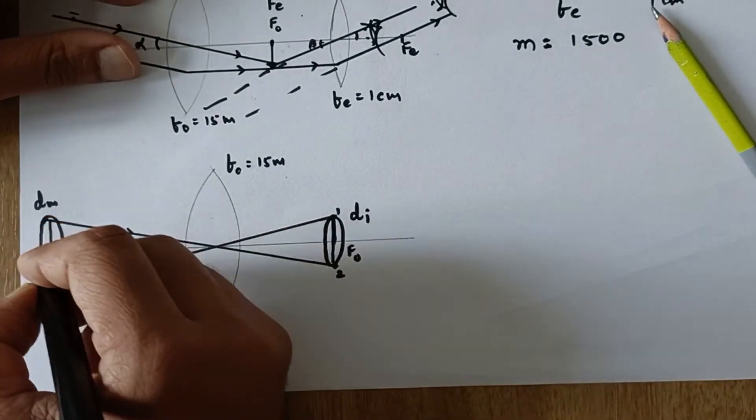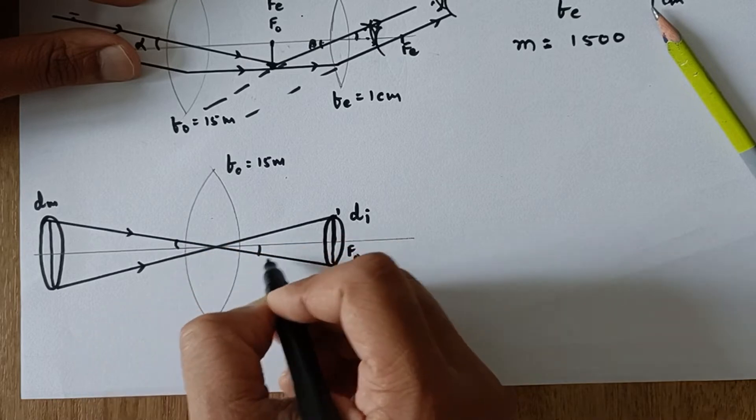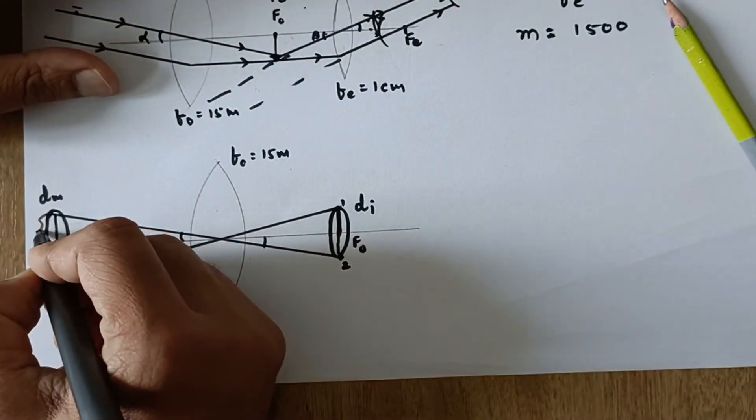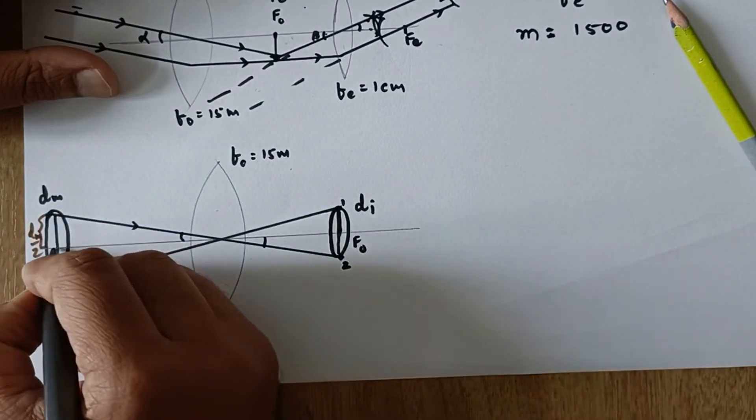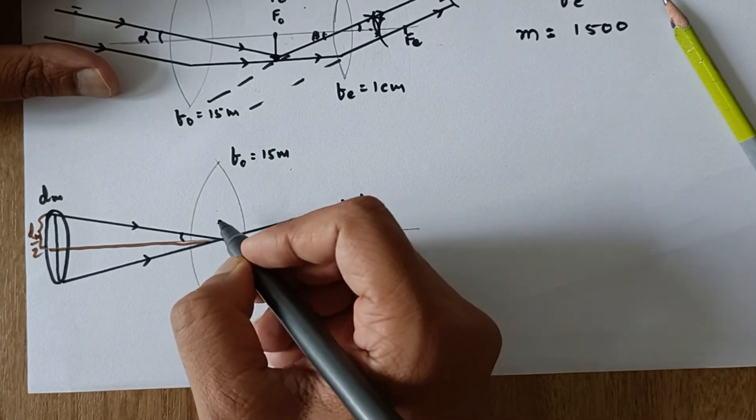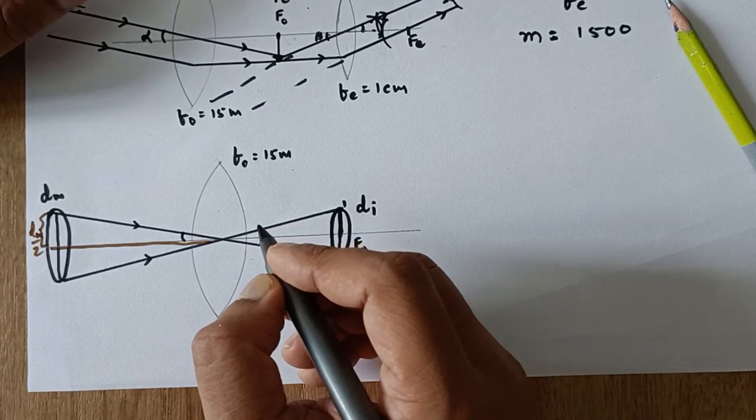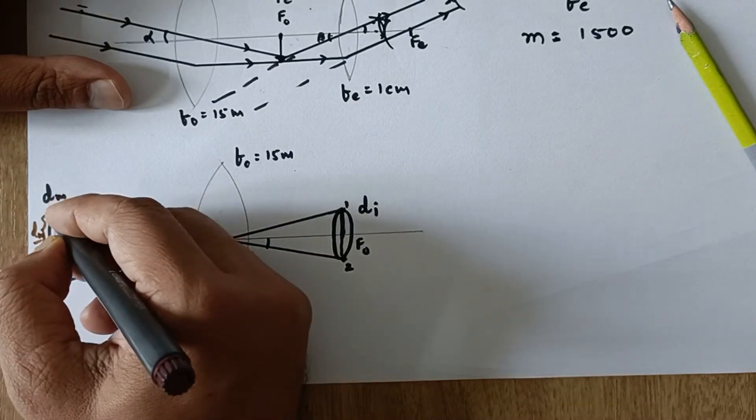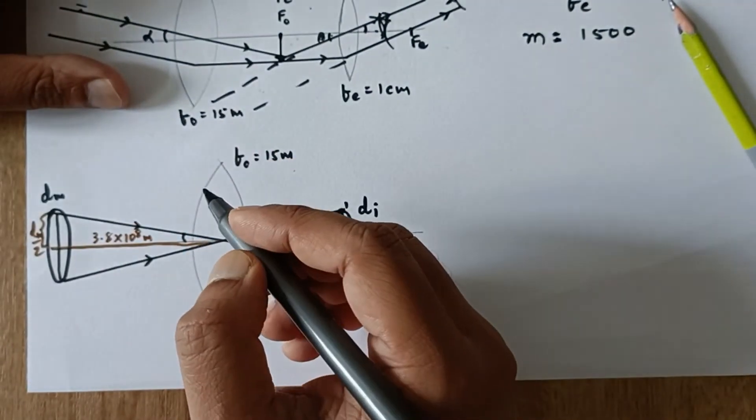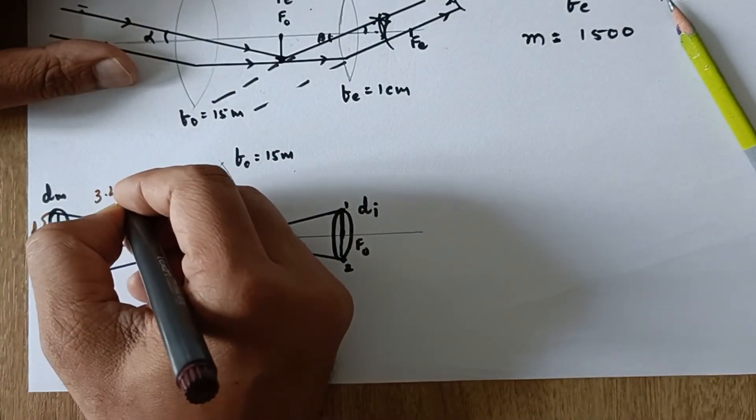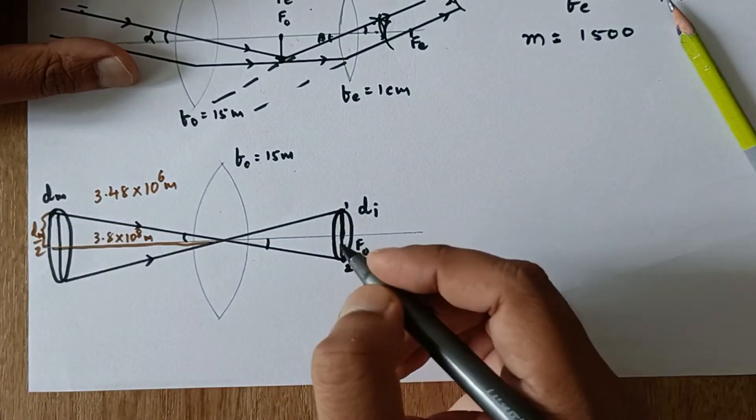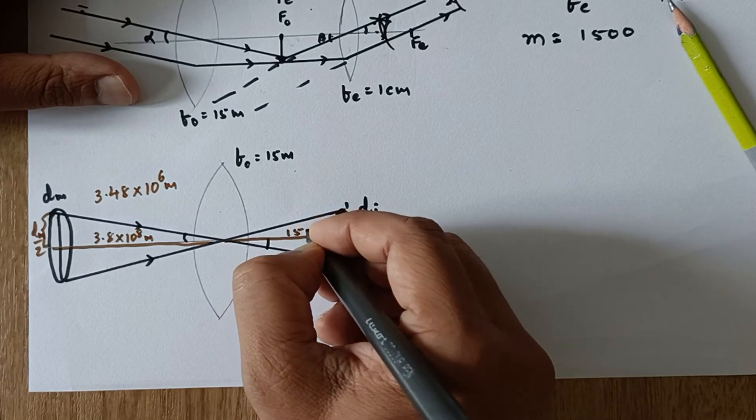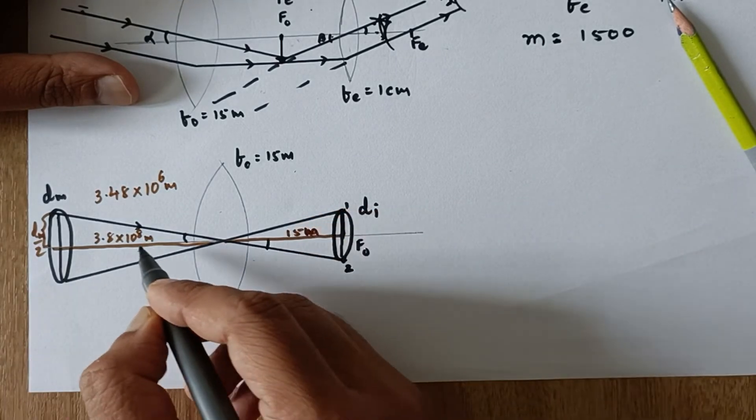So that means this angle and this angle will be equal or this whole angle are vertically opposite angles. So this distance, if I say that this part is dm by 2. And this distance is the distance from moon to the lens, which is given to us as 3.8 into 10 raised to 8 meters. So this is 3.8 into 10 raised to 8 meters. And then this diameter divide by 2. And the diameter of the moon is also given to us as 3.48 into 10 raised to 6 meters. This is the entire diameter. Now, since this distance we already know, because this distance is the focal length and the focal length is 1500 centimeter or simply 15 meters.